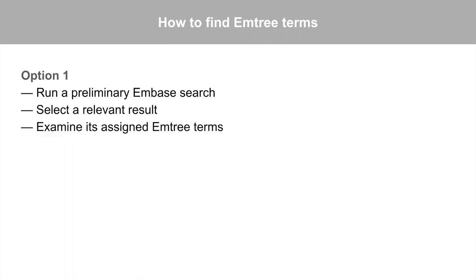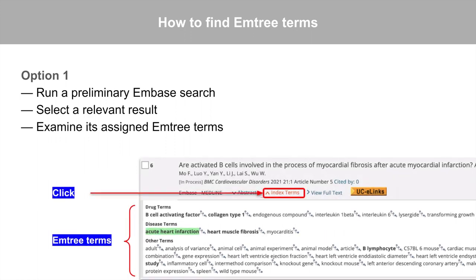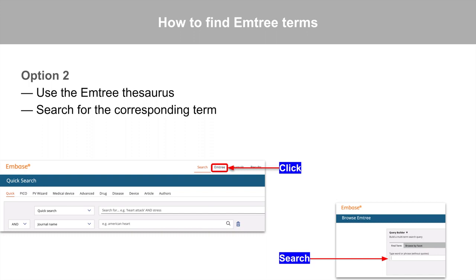Option 1: Run a preliminary Embase search, select a relevant result, and then examine its assigned EmTree terms. Click the Index Terms tab in a search result, and then review the EmTree terms assigned to the publication. Option 2: Use the EmTree thesaurus. It's available through the link in the upper right corner of Embase. Search on your topic to find the corresponding EmTree term.